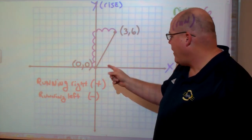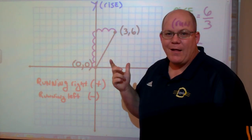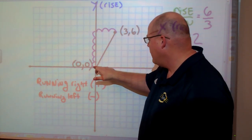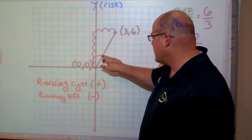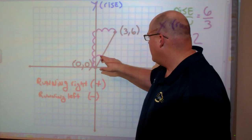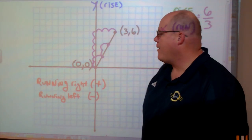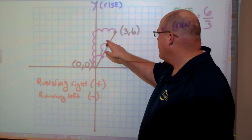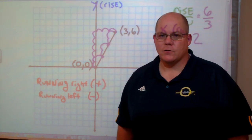So if I rise 2 from here and run 1, that line should go through that point. Let's check — rise 1, 2, run 1 — and that line goes through that point. Again, rise 1, 2, run 1 — that line goes through that point. Again, rise 1, 2, run 1 — that line goes through that point.